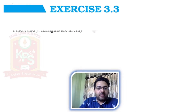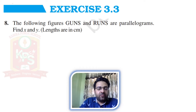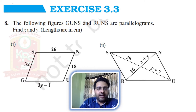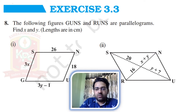Exercise 3.3, Question number 8. The following figures GUNS and RUNS are parallelograms. Find X and Y — lengths are in centimeter. As you can look at these figures, GUNS is a parallelogram and RUNS is also a parallelogram. So, you will find out here the X and Y values.